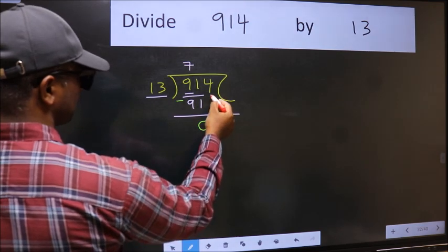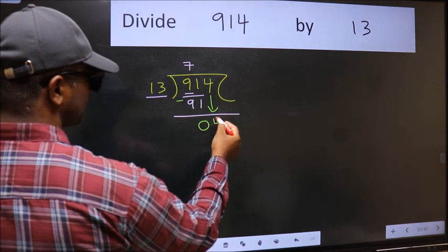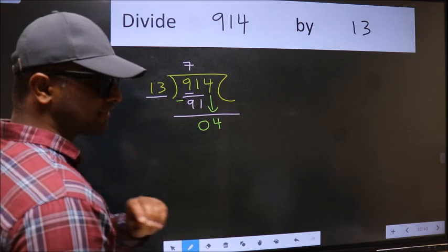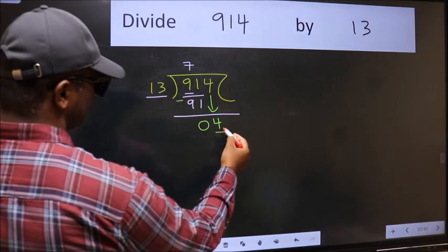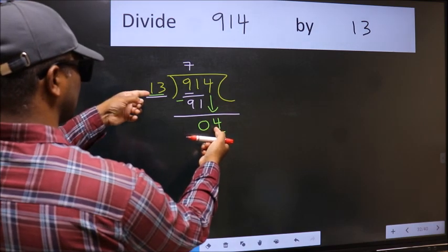Now we should subtract 91 minus 91, 0. After this, bring down the beside number. So 4 down. After this step, the mistake happens and the mistake is this. Here we have 4 and here 13. 4 is smaller than 13.